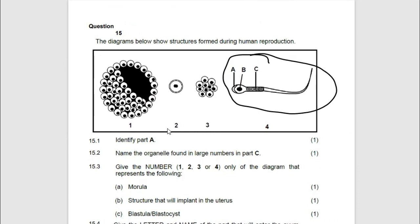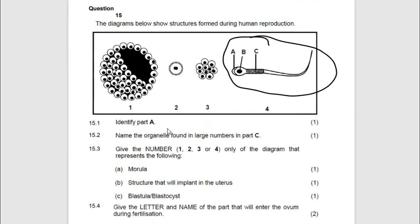Acrosome, we have seen it. Nucleus, we have seen it. Mitochondria or middle piece, we have seen it based on the question which is being asked, most especially if the line is not clear. Identify A, we have seen it acrosome. Name the organelle found in large numbers in part C. We have seen them, it is mitochondria.